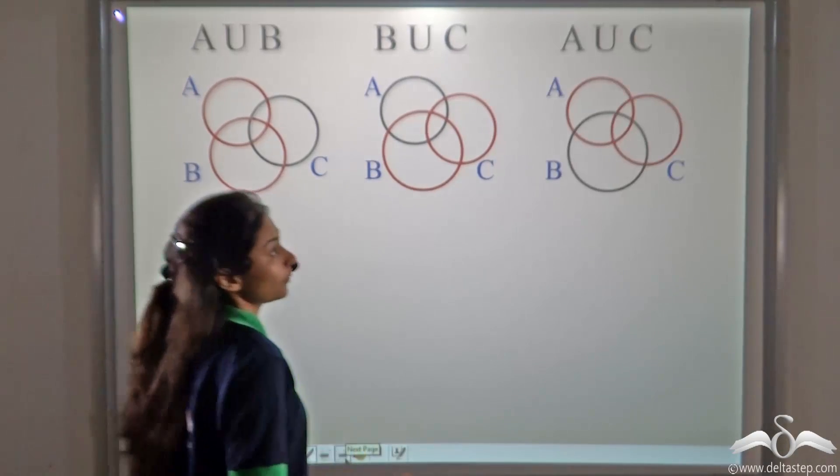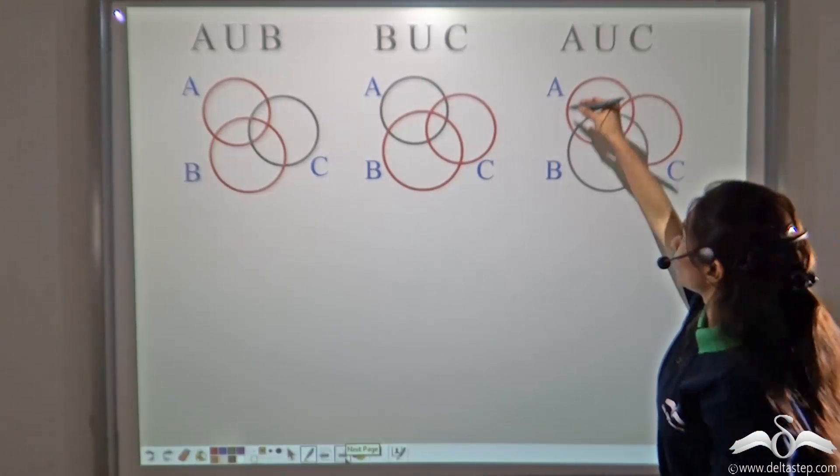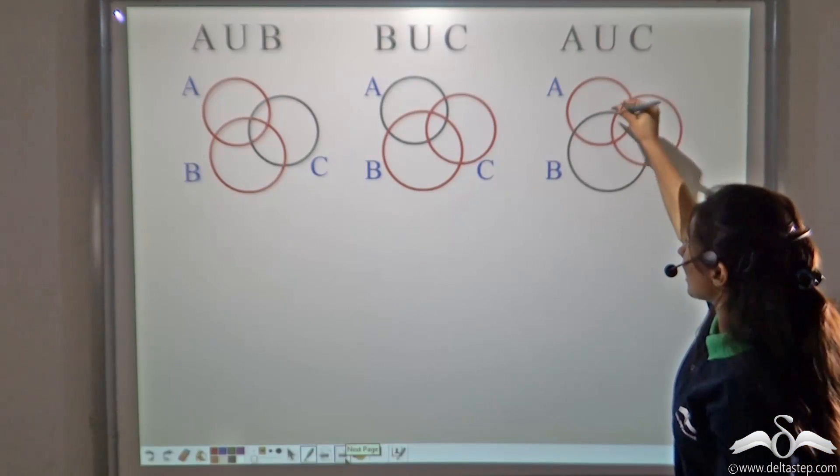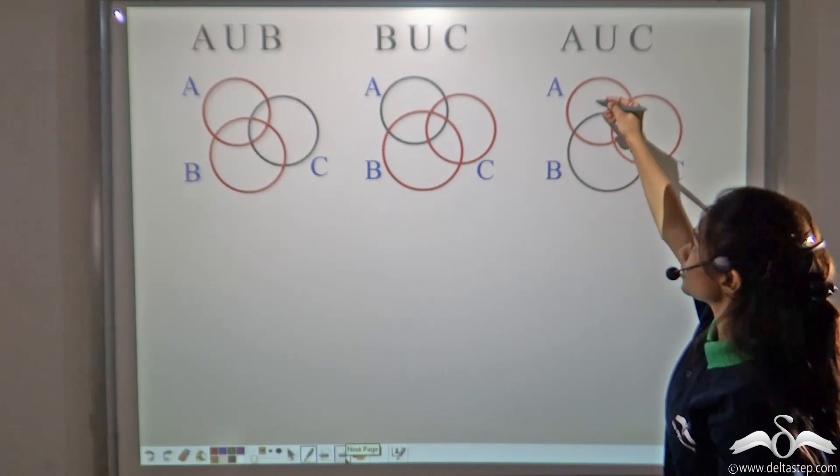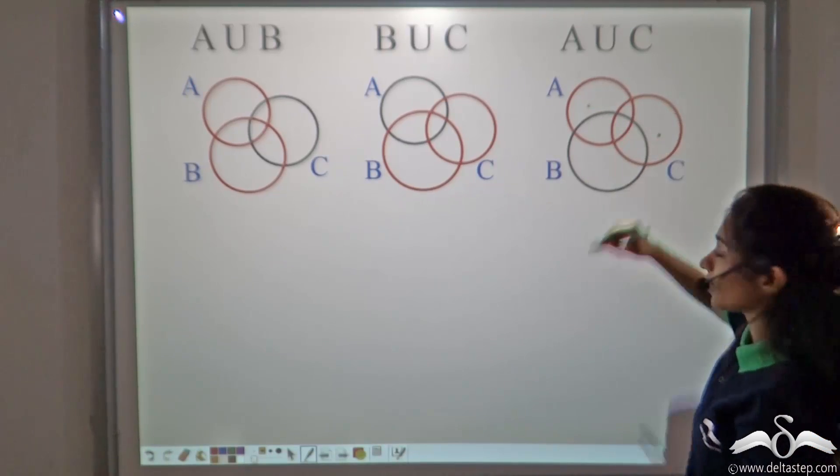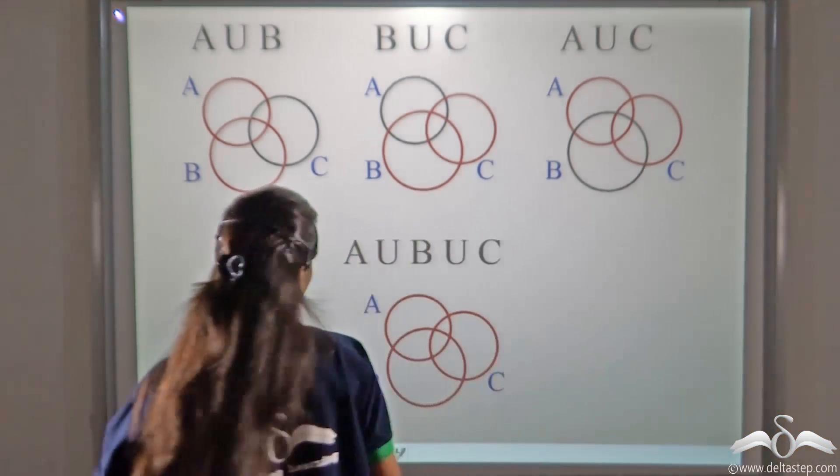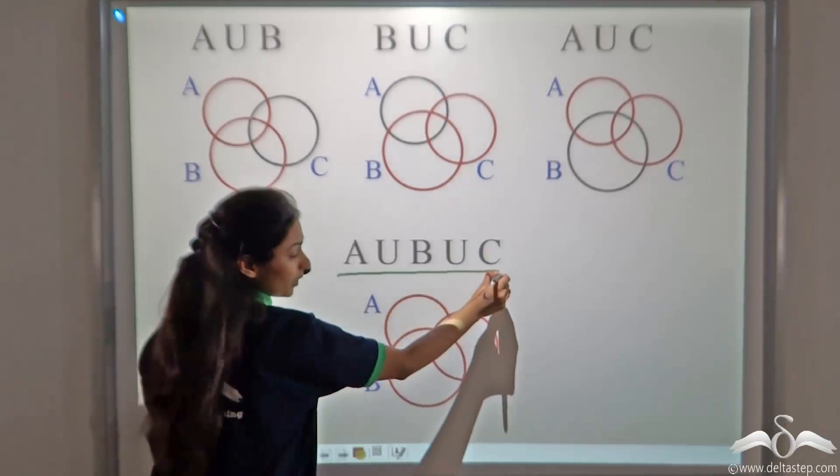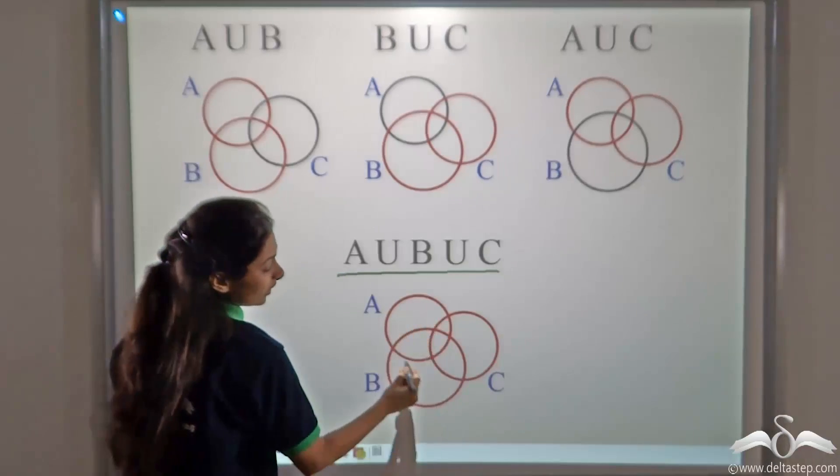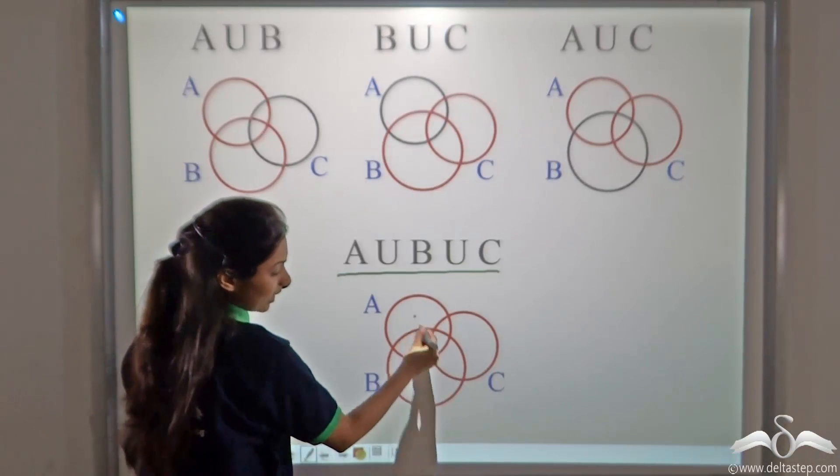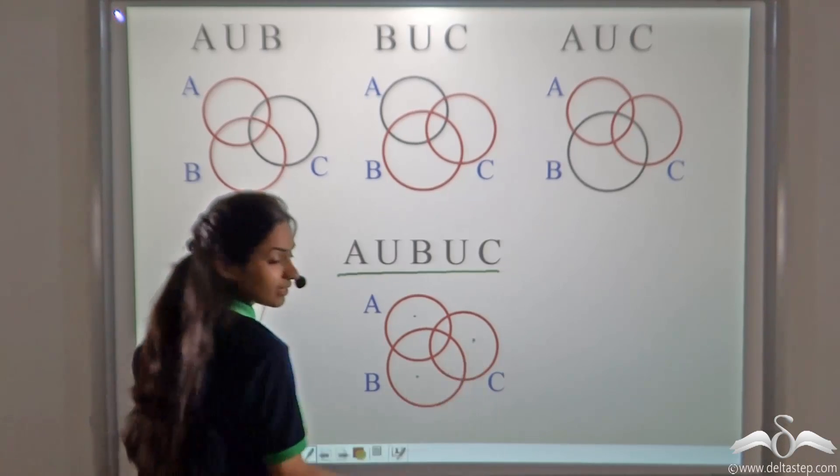In the same way, A union C can be denoted by these two circles, A and C. Writing the elements present in A and the set of elements present in C distinctively. And finally A union B union C, that is writing all the elements present in set A, set B or set C.